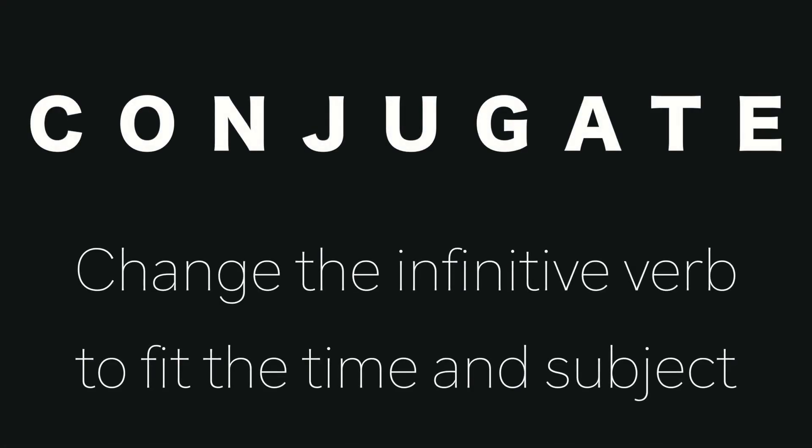The word 'conjugate' means when you change your verb — in this case an infinitive verb — to fit your time and your subject. Your time periods are past, present, and future. Later on you'll learn the subjunctive, but don't worry about that now. In Spanish, sometimes things get interesting because you don't always mention who the subject is. The reason is that all the endings are different, so you actually know who the subject is by the verb itself.